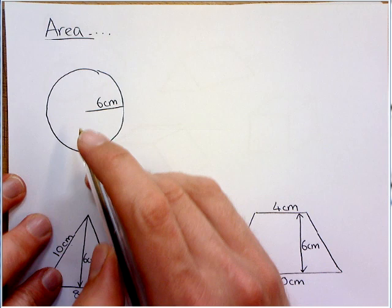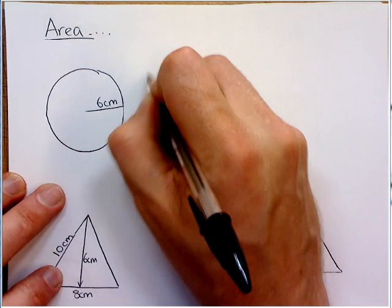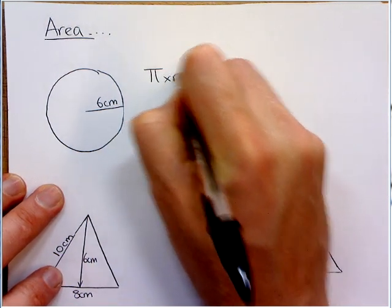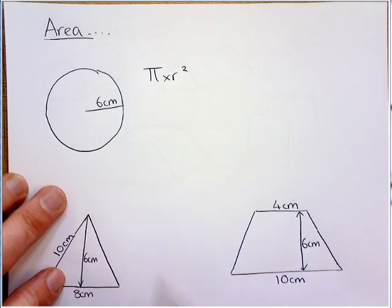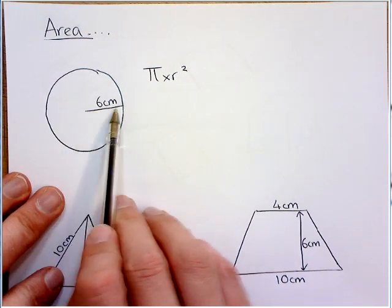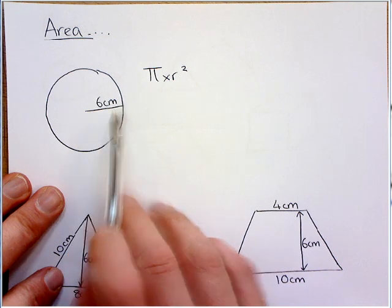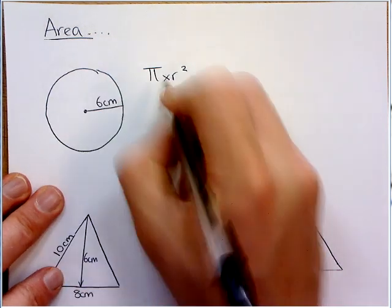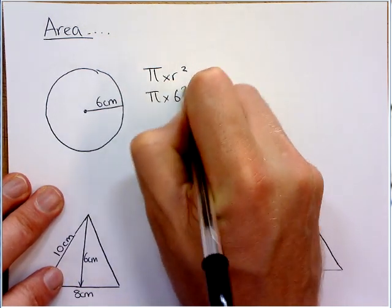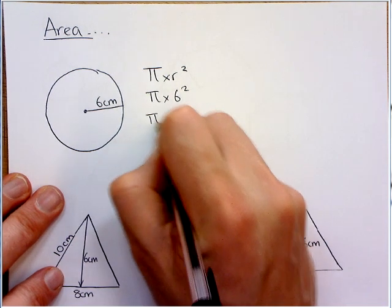So here is a circle and you have to remember this formula that the area of a circle is pi times the radius squared. Now in a question they might give you the radius which is very handy if they do because in this case it's 6, that being the centre. So it's simply pi times 6 squared which is the same as pi times 36.